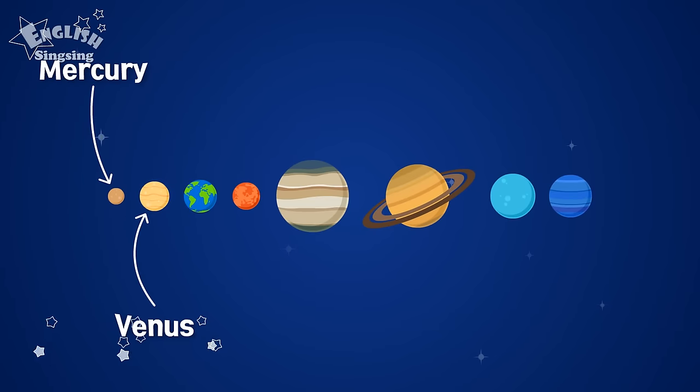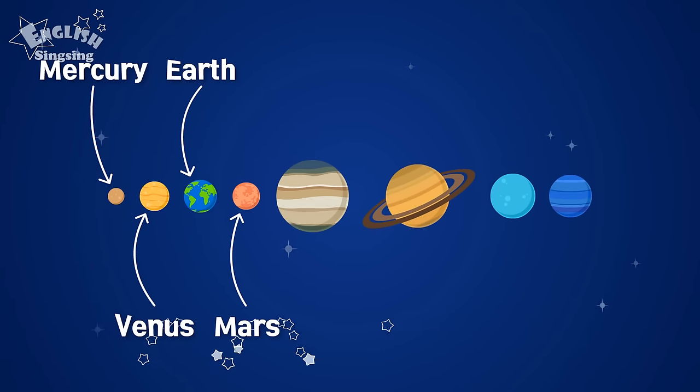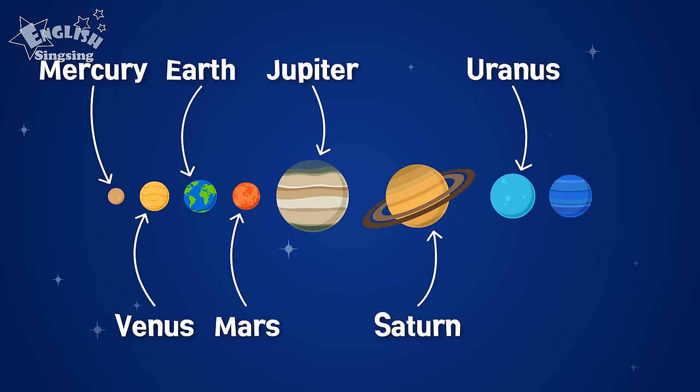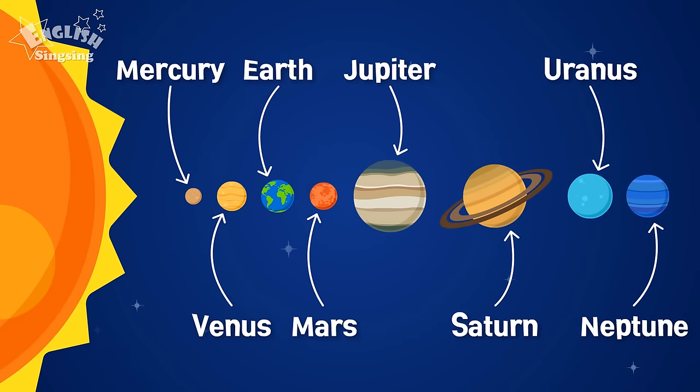Mercury, Venus, Earth, Mars, Jupiter, Saturn, Uranus, Neptune, and Sun.